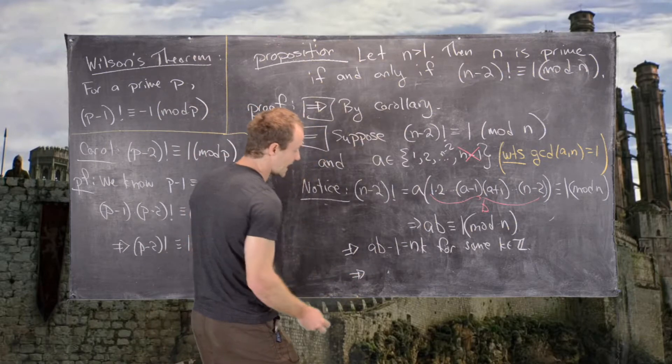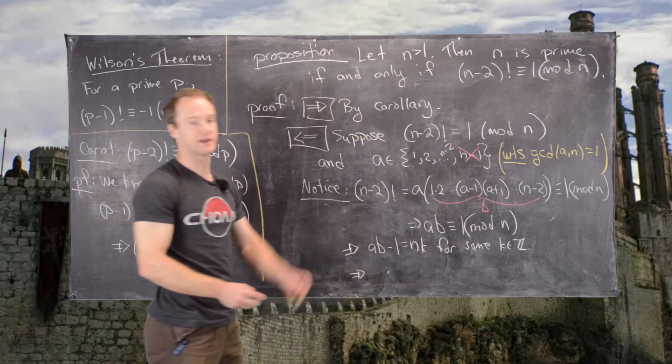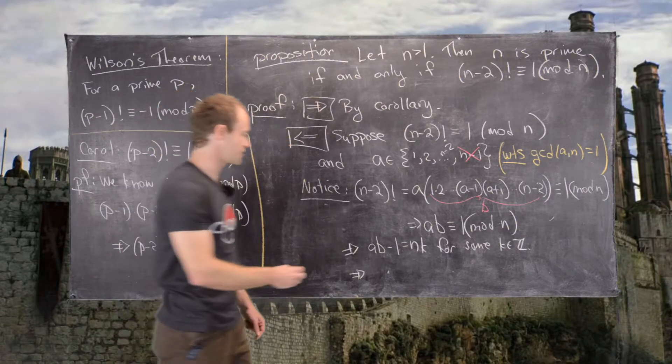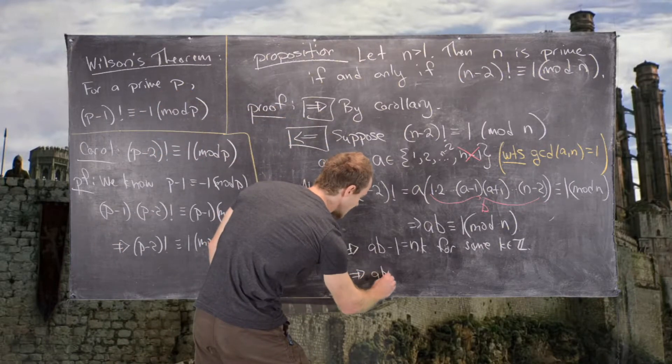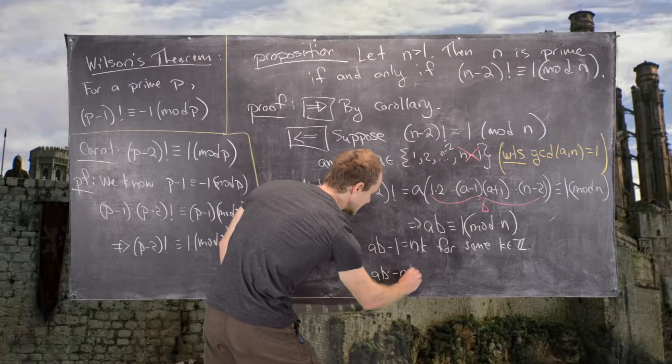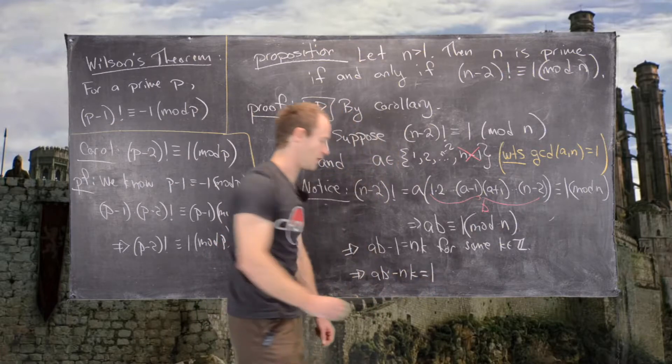From there, we can rewrite this so we can put 1 on one side of the equation. We get ab - nk equals 1.